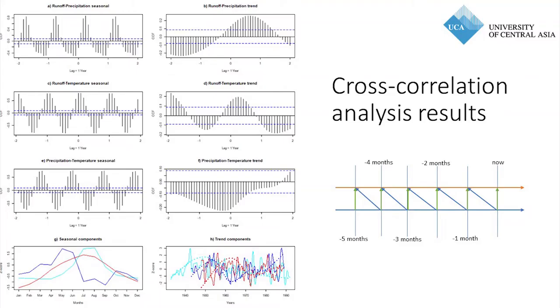The charts show correlation coefficients at different lags for different components. The correlation of runoff and precipitation is basically positive, indicating that runoff reacts to precipitation. In the seasonal components — blue is precipitation, red is temperature, cyan is runoff — precipitation is highest in April while runoff peaks in the hottest summer months, illustrating the role of glaciers: they capture precipitation as rain and snow in spring, then discharge it in the hot summer.